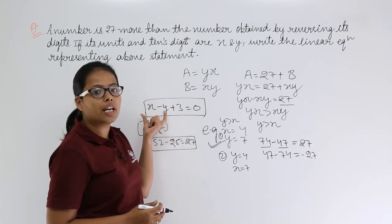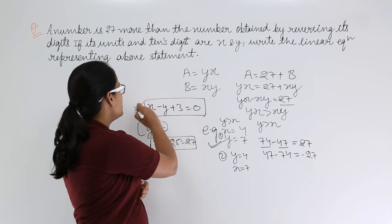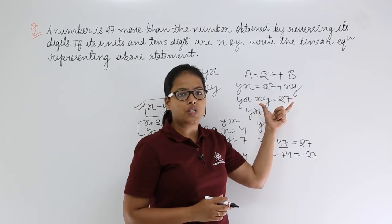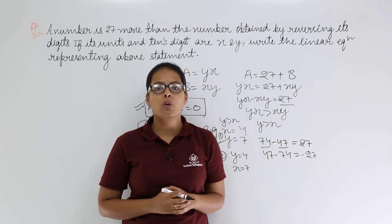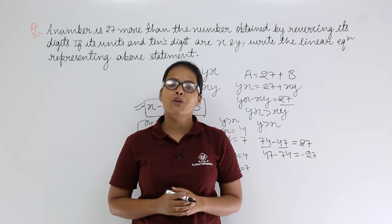Now you can see here when you will put x is equal to 2 in this, y is equal to 5 in this, you will get minus 3, minus 3 plus 3 will always give you 0. So this linear equation will always satisfy this equation. I hope there should be no doubt here. I will be taking more problems in coming video lectures. Thank you.